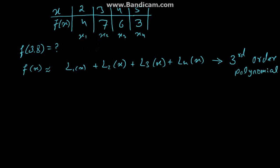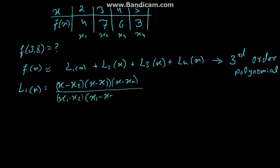Here we take at least 4 points. So that's how it gives us third order polynomial. L1 of x equal to x minus x2 into x minus x3 into x minus x4 over x1 minus x2 into x1 minus x3 into x1 minus x4 into f of x.